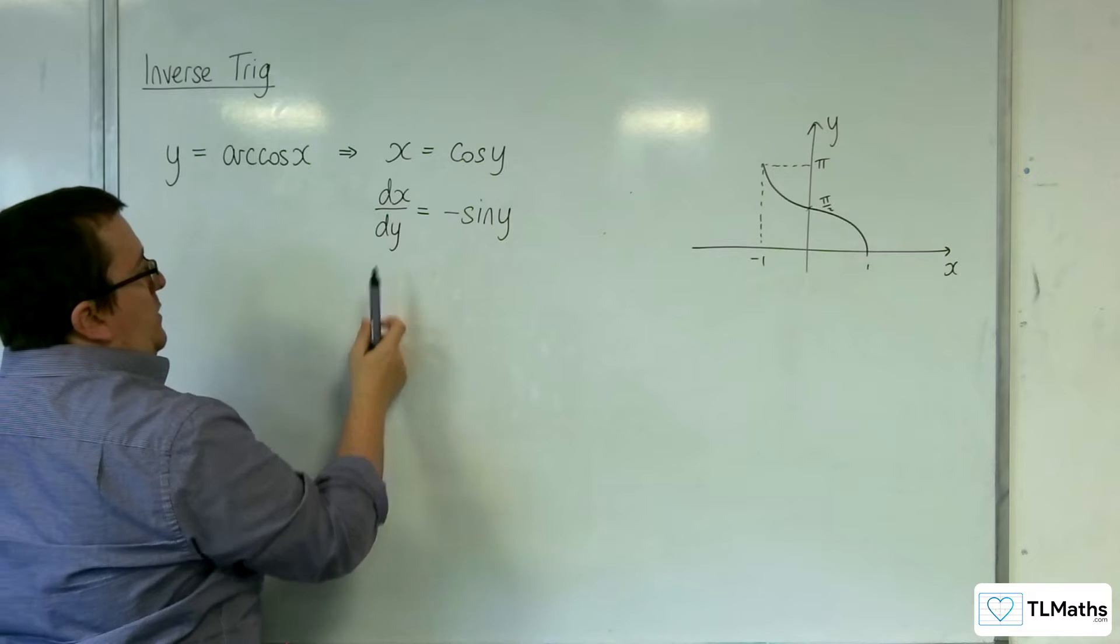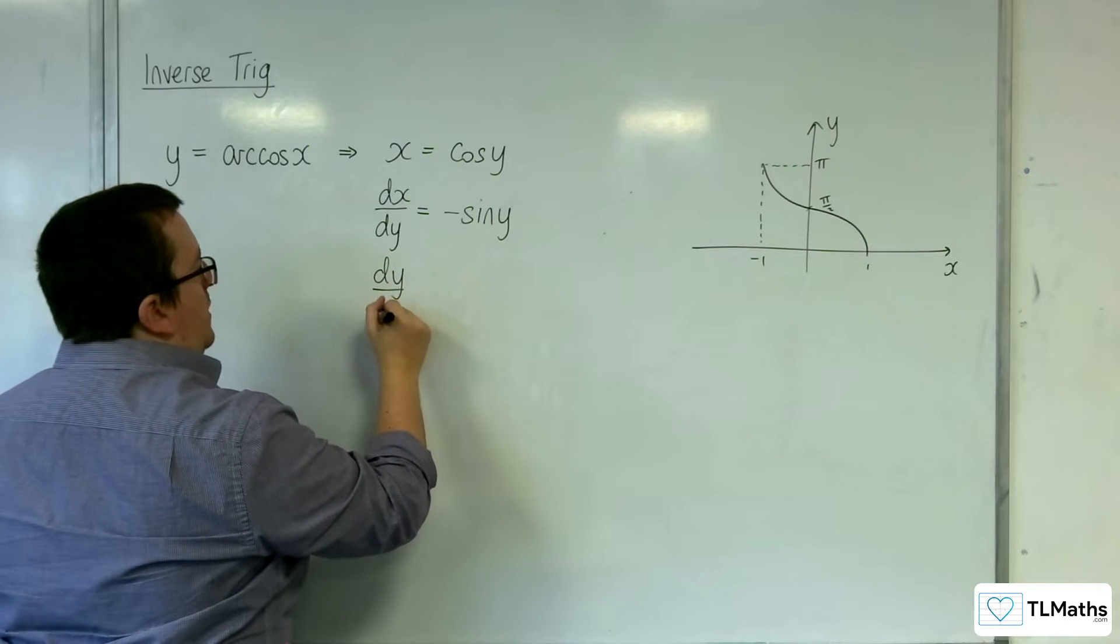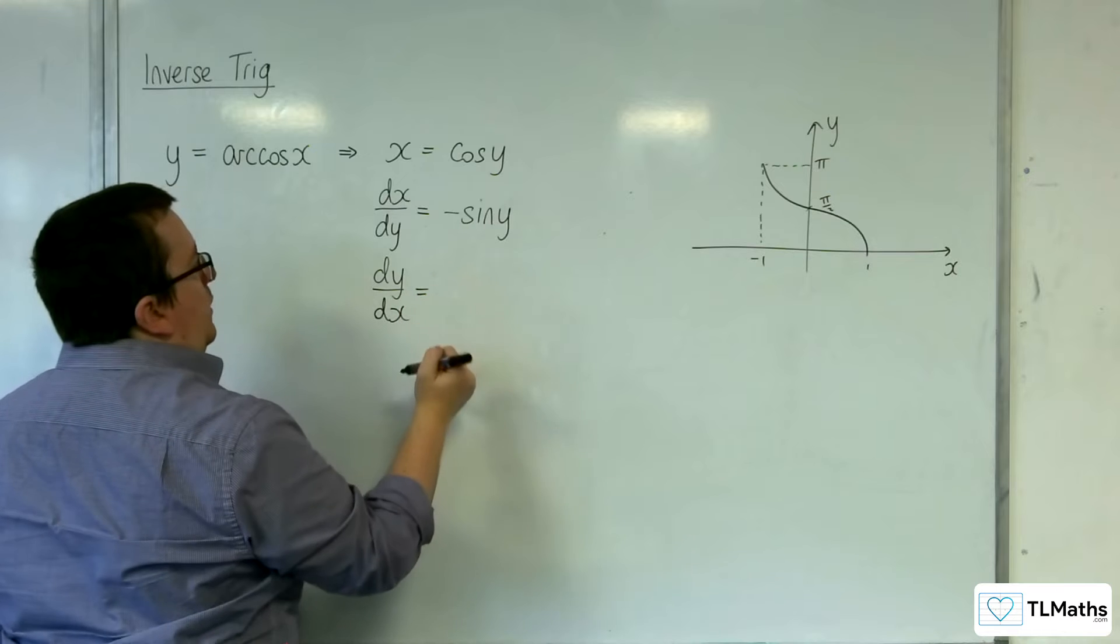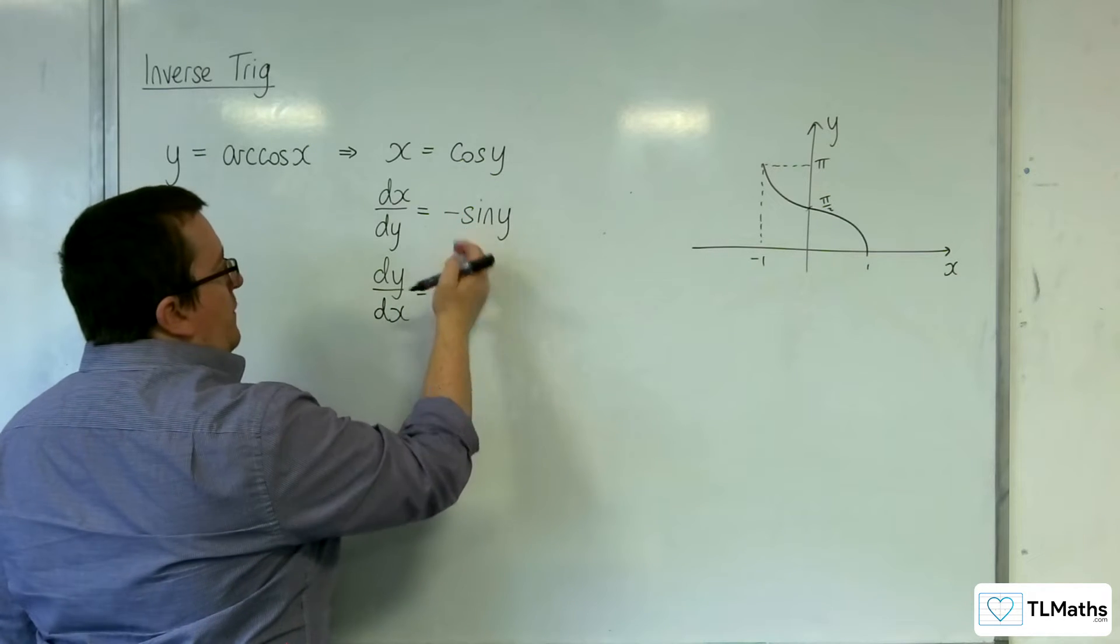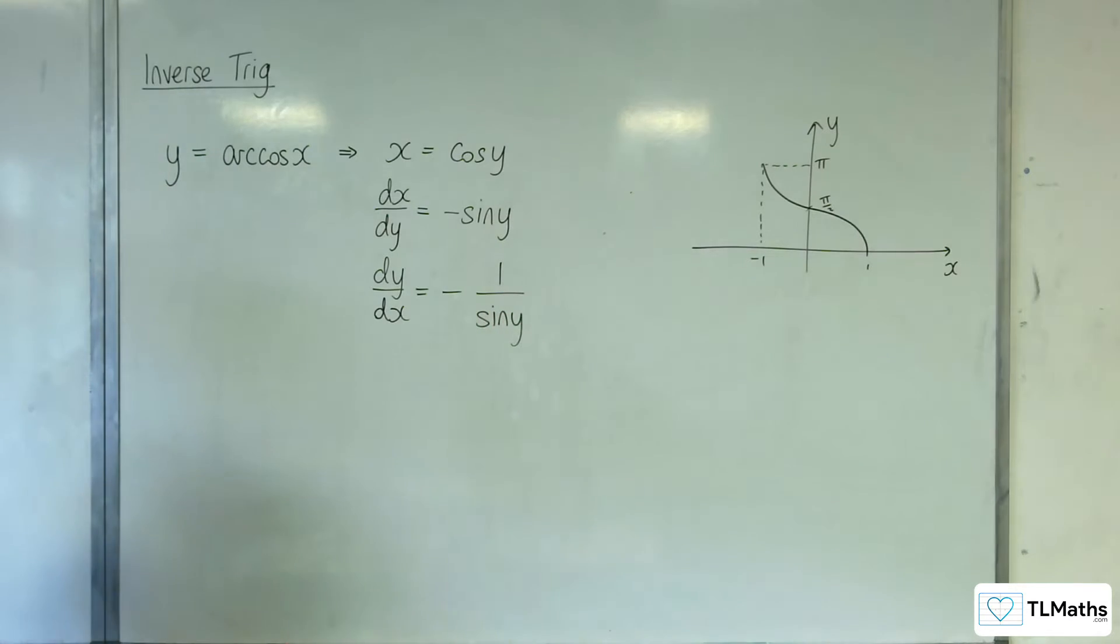So now that I've got dx by dy, I can take the reciprocal of both sides. So dy by dx will be equal to the reciprocal of this: minus 1 over sine of y.